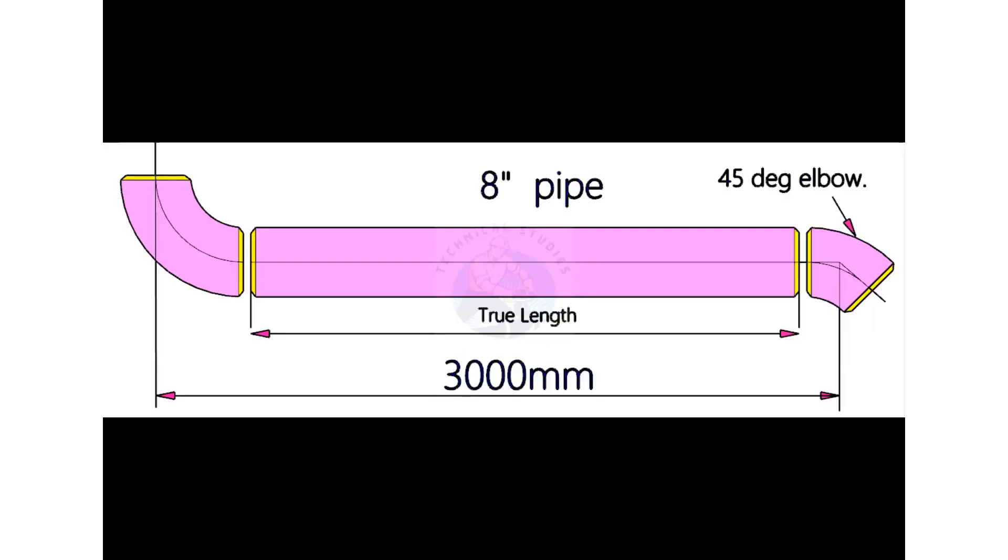Let us try another example. This piping has an 8 inch, 90 degree long radius elbow and 45 degree elbow. To calculate the takeoff of a 45 degree elbow, multiply the diameter in inches by 0.4142.